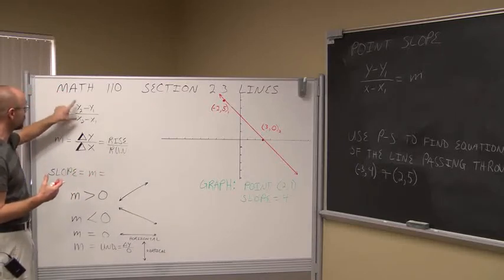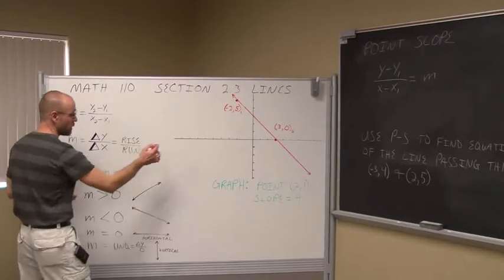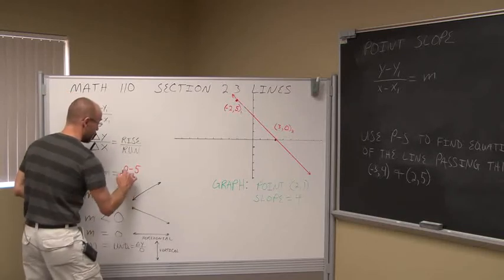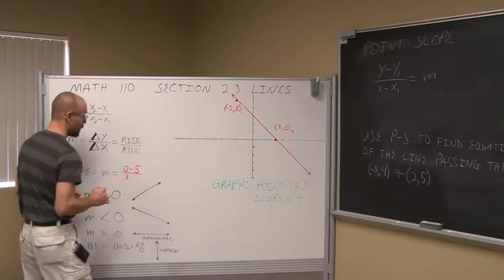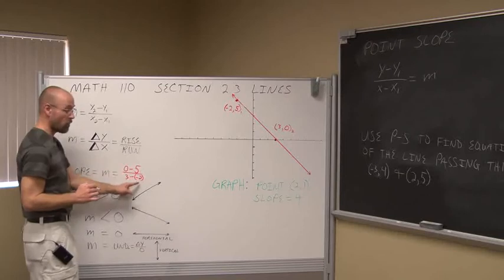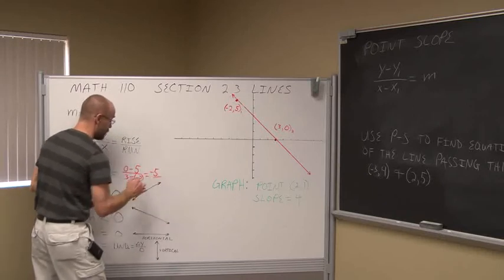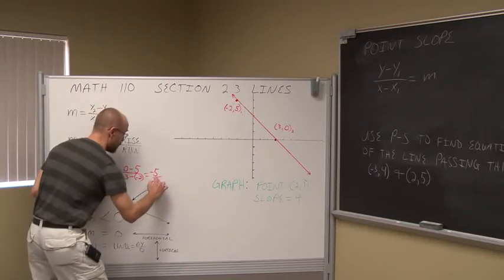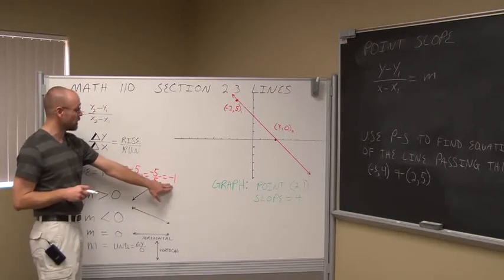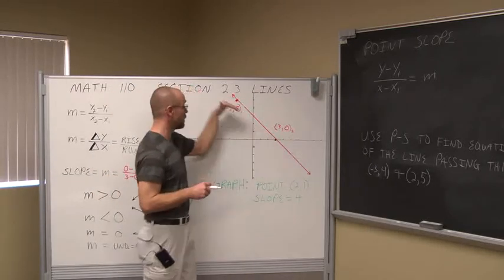Notice the y and x values from the same point are lined up with each other — make sure you do that each time. So my y value of point 2 is 0, minus the y value of the first point, 5, over the x value of point 2, which is 3, minus the x value of the other point, negative 2. Be aware of signs. On top: 0 minus 5 is negative 5. On the bottom: 3 minus negative 2 is 3 plus 2, which is positive 5. Simplified, that gives us negative 1. The slope of this line is negative 1.